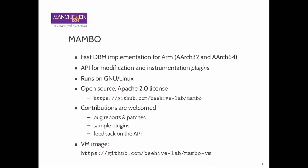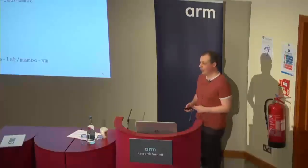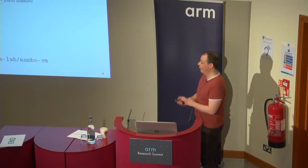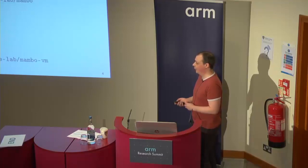Now I can finally introduce Mambo. It is our efficient implementation of Dynamic Binary Modification for ARM, and it supports both 32-bit and 64-bit platforms. It provides an API which can be used by external users to implement their own tools fairly conveniently. We developed it on Linux, which is the platform we officially support. However, we are also aware of external users running it on Android — for example, it's been used by an external group to implement taint tracking for security research on Android. The code of Mambo and a number of plugins are open source and available in our GitHub repository. We welcome contributions such as bug reports or patches.